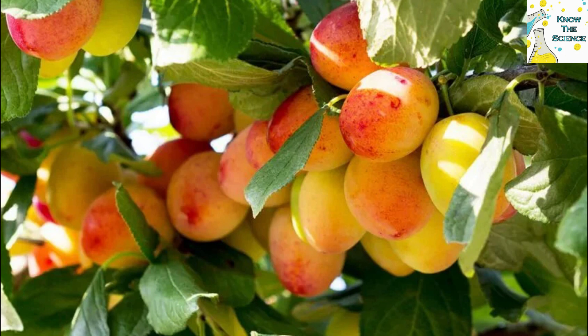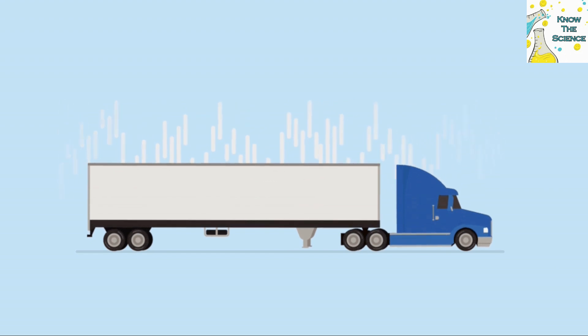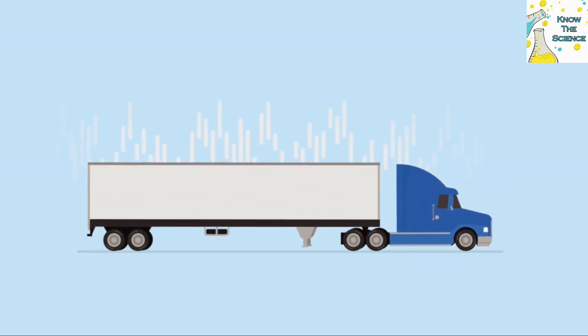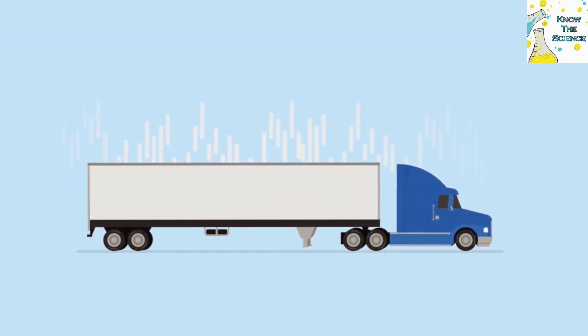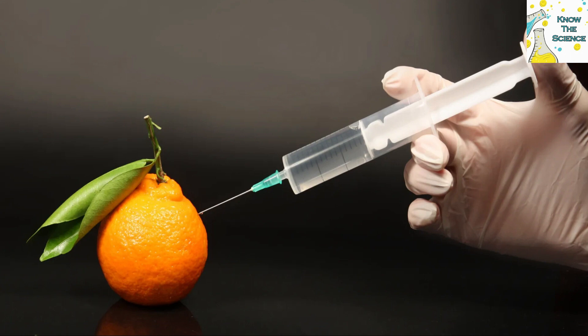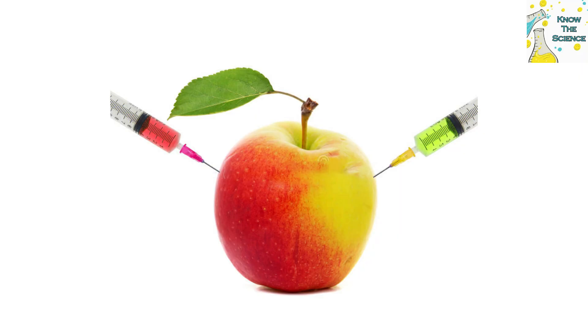Generally fruits ripen on the trees, but harvesting of unripe fruits becomes a necessity as ripe fruits are not suitable for long-distance transport and have a small shelf life. Unsaturated hydrocarbons like ethylene and acetylene speed up the ripening process and cause cosmetic color changes in fruits to impart them a ripened look.